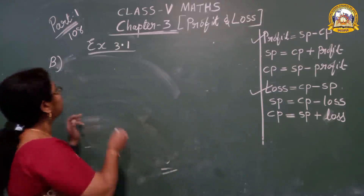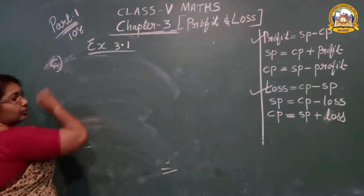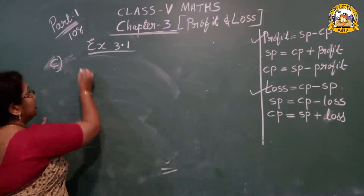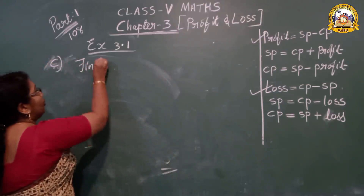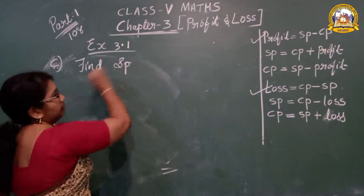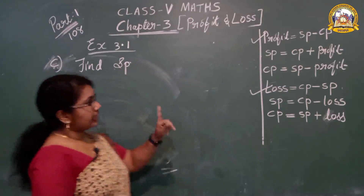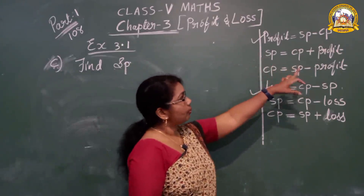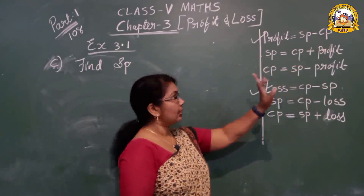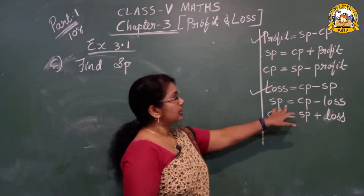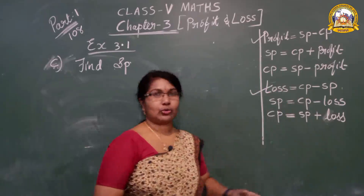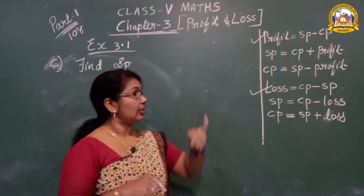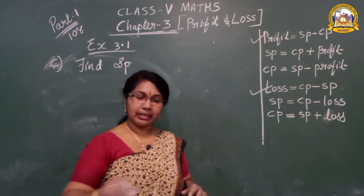Now question number C — what is written there? Find the SP. For finding SP, two methods are there. When profit is given: SP equals CP plus Profit. When loss is given: SP equals CP minus Loss. When profit is given, we add; when loss is given, we subtract.